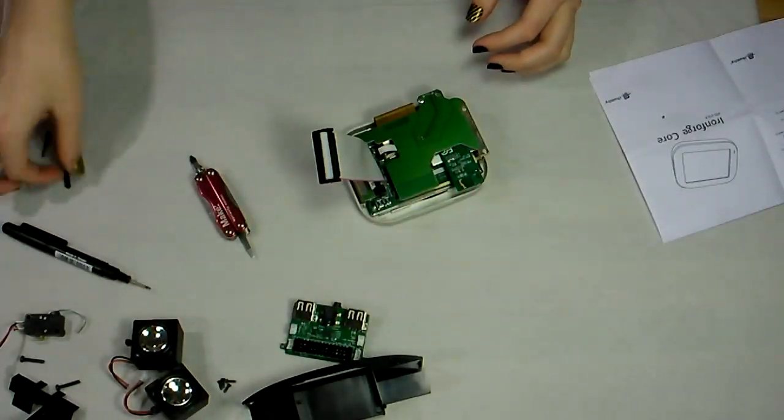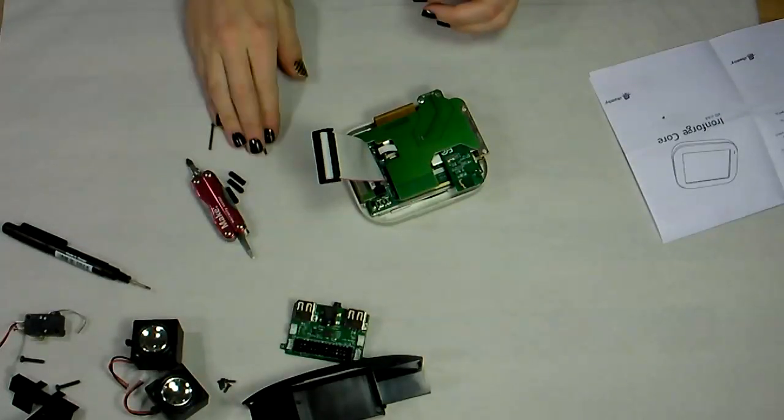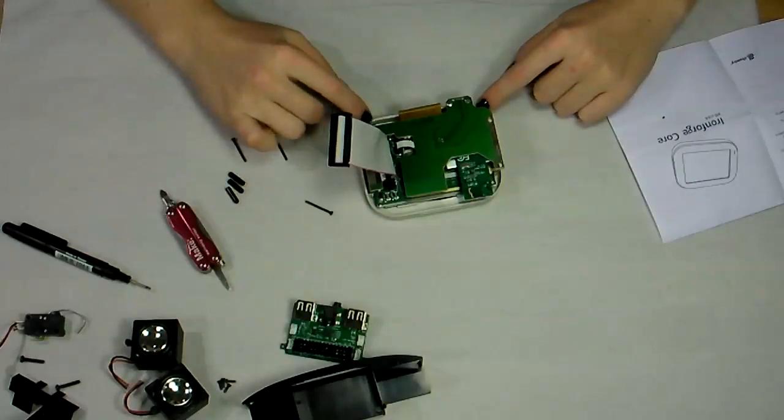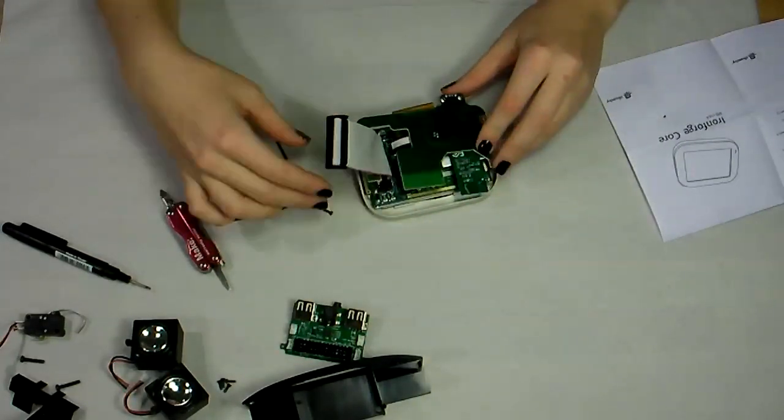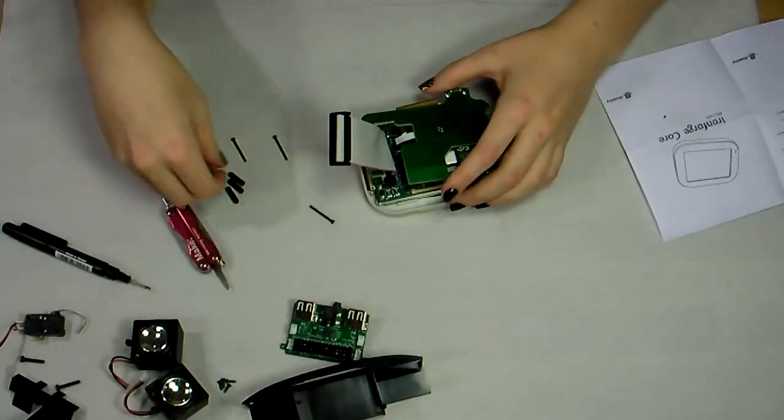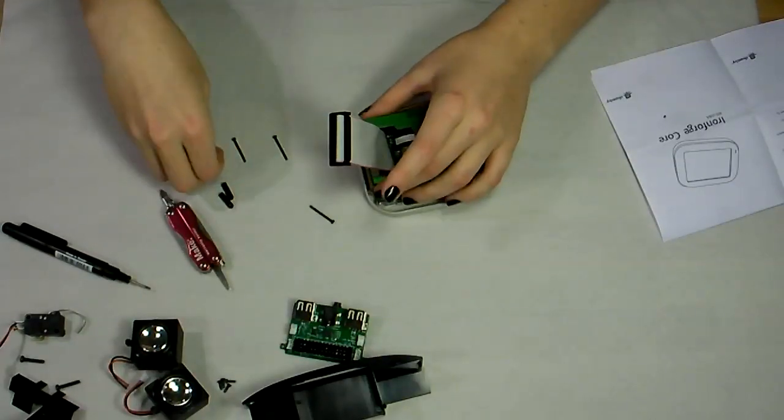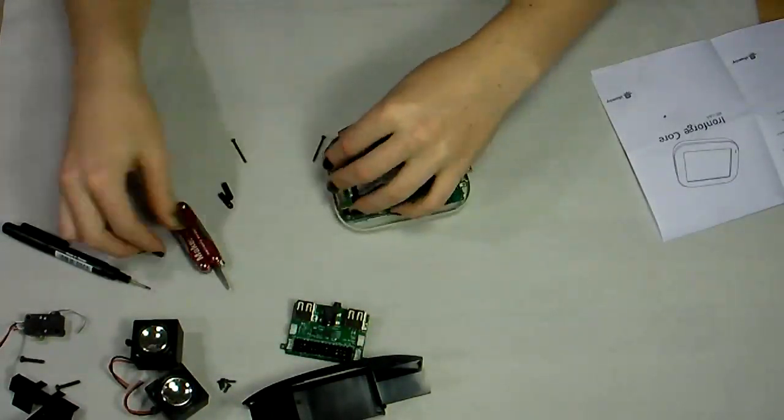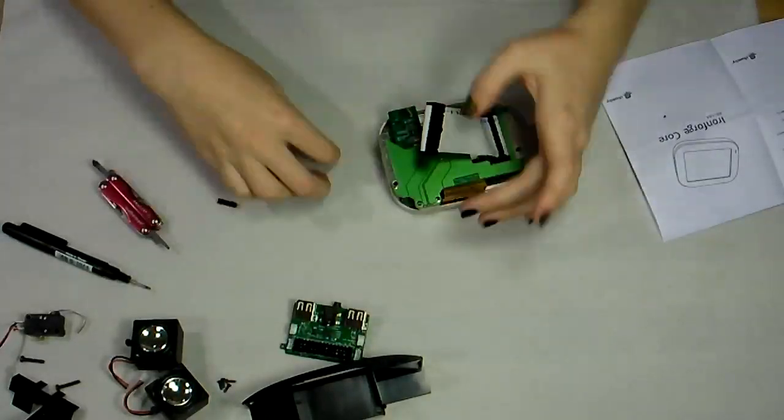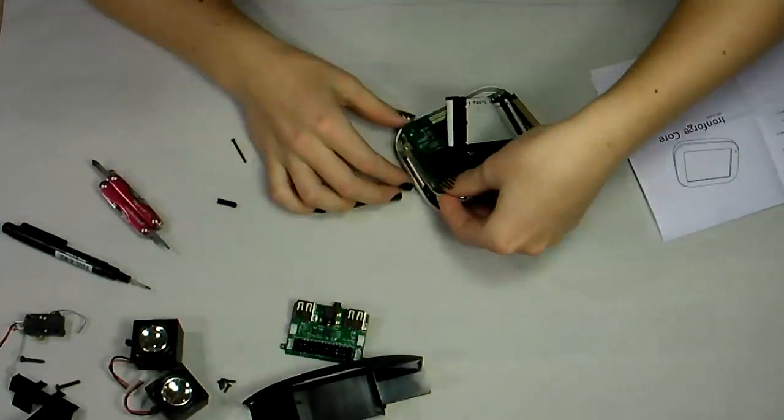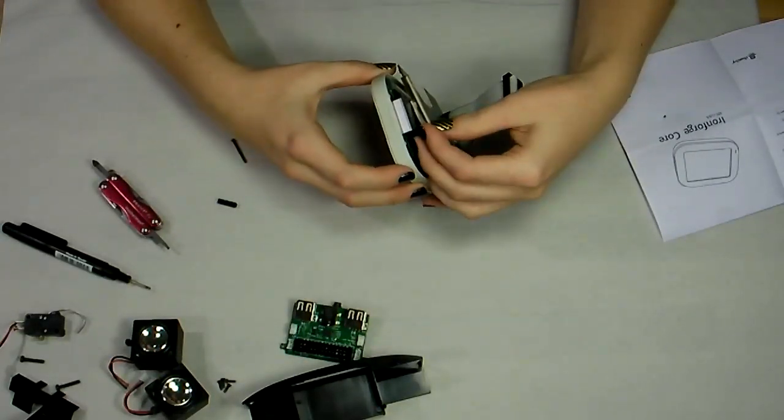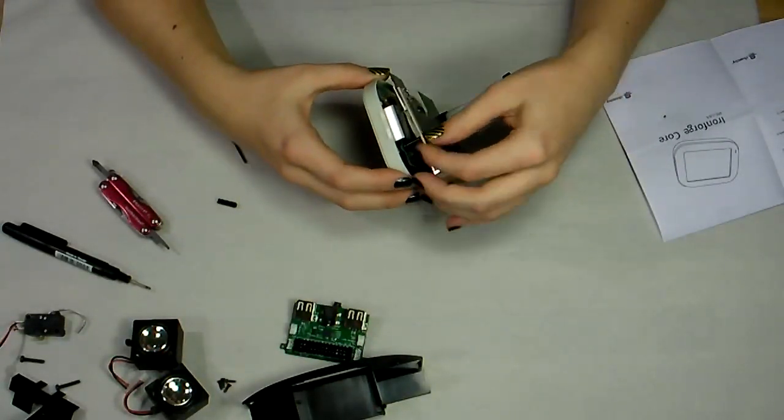Now it's time to use these plastic standoffs and the three long black screws to attach all of the boards to the front screen bezel. It can be tricky to sandwich all three layers successfully, so just be careful to line up all of your boards.